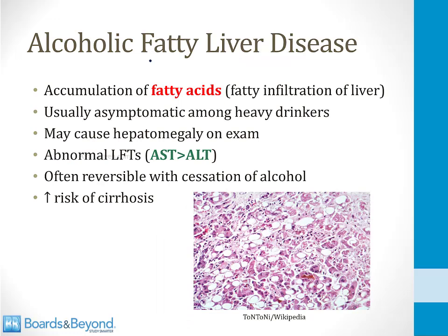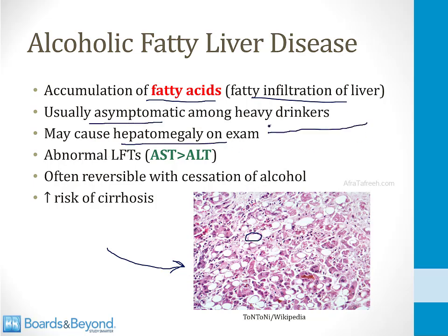Fatty liver disease occurs in alcoholism due to the accumulation of fatty acids in the liver — it's called fatty infiltration of the liver. If you look at this biopsy specimen, you can see all these white spaces among the hepatocytes, which represent fat deposition. This is usually an asymptomatic condition. It may cause an enlarged liver on physical exam — especially in board questions, if they tell you the liver is enlarged in a heavy drinker, they are telling you there's fat deposition. The AST usually increases to a greater degree than the ALT because alcohol is a mitochondrial toxin. If patients stop drinking, this is often reversible, and alcoholics with fatty liver disease have a higher risk of developing cirrhosis.